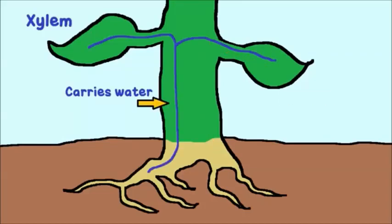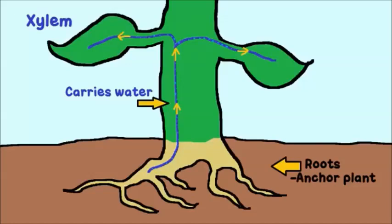The xylem carries water. Xylem is found throughout a vascular plant. Water is absorbed from the roots of a vascular plant and carried upwards. Roots are specially designed to help anchor plants and also to absorb the water found in the soil they are in.